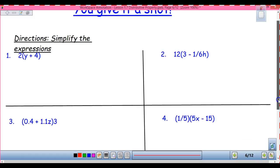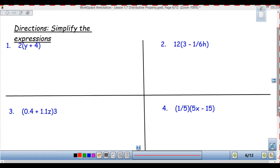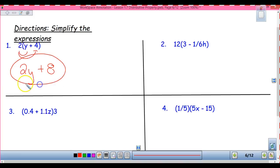All right? So, we got all kinds of fractions and decimals. All right, so here we're taking 2 times y and getting 2y plus, and then I'm taking 2 times 4 and getting 8. So I have 2y plus 8.